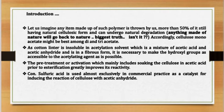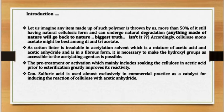As cotton linter is insoluble in the acetylation solvent — which is a mixture of acetic acid and acetic anhydride — and is in fibrous form, it is necessary to make the hydroxyl groups as accessible to the acetylating agent as possible. Pre-treatment or activation, which mainly includes soaking the cellulose in acetic acid prior to esterification, greatly improves its reactivity. Concentrated sulfuric acid is used almost exclusively in commercial practice as a catalyst for inducing the reaction of cellulose with acetic anhydride.